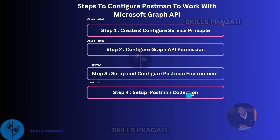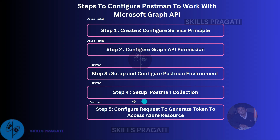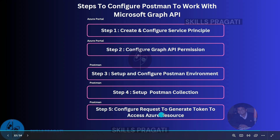Next we will move to step 5. In this step, we will configure requests to generate a token to access Azure resources. This step involves creating a request in Postman to generate an access token. An access token is a security token that your application can use to access resources on behalf of a user or itself.